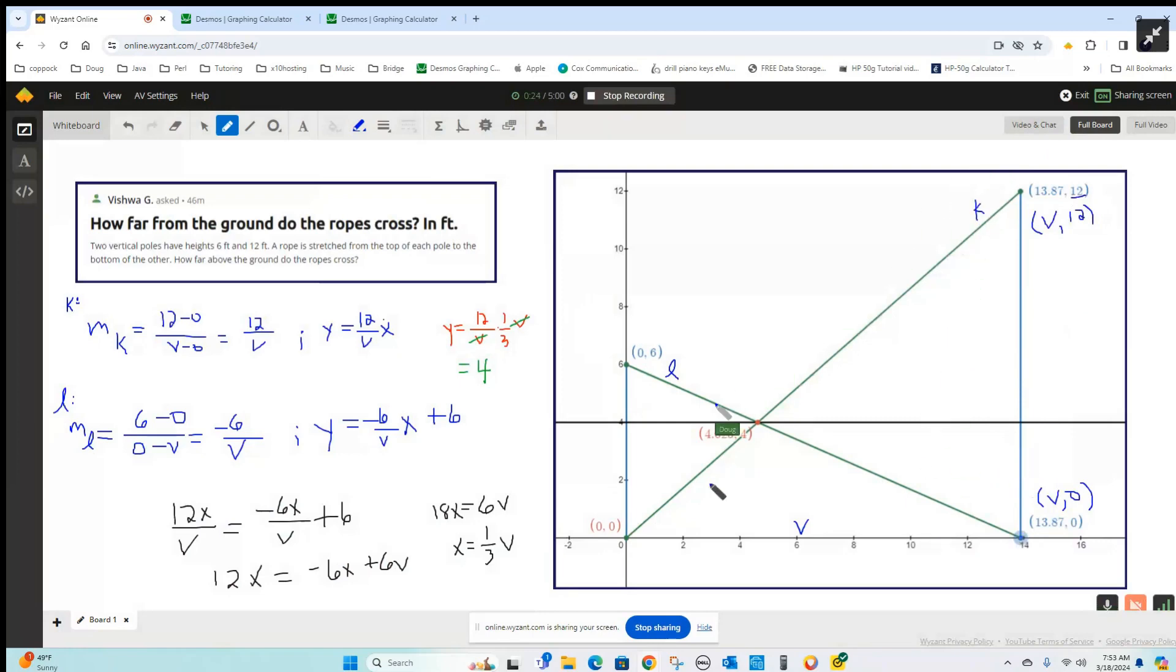And we want to find out where these two wires cross that are joining the top of one pole to the bottom of the other, how high is that?